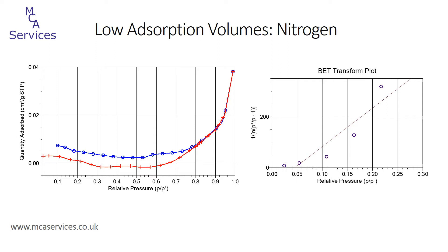We can still apply BET theory to the data, and when the BET transform plot is shown on the right, the transformed relative pressure data does not fit at all well to the regression line and we can see that the y-intercept is negative. Consequently, the BET C value is negative, which is theoretically impossible as it would mean a negative heat of adsorption. A BET area is still calculated at 0.003 square meters per gram, but given the poor fit, the poor correlation coefficient, the negative C value, and the general isotherm profile, we have to consider this to be erroneous and not a true representation of the sample surface area.